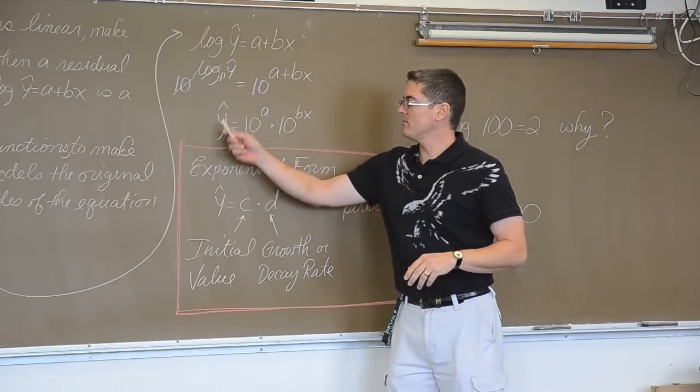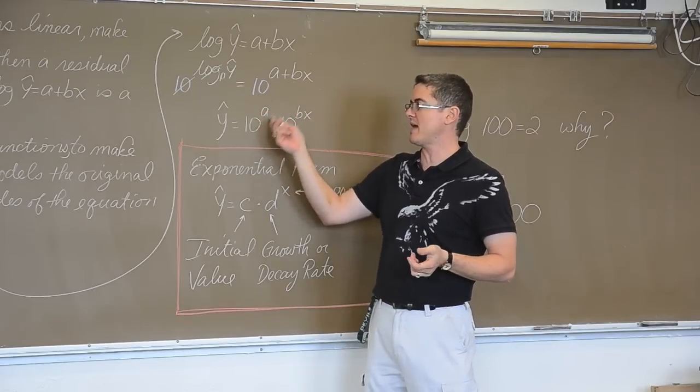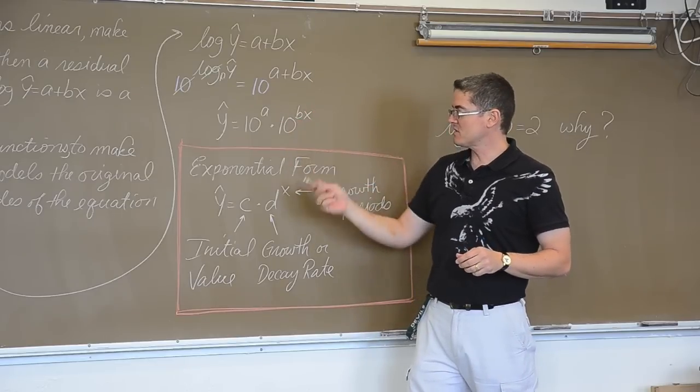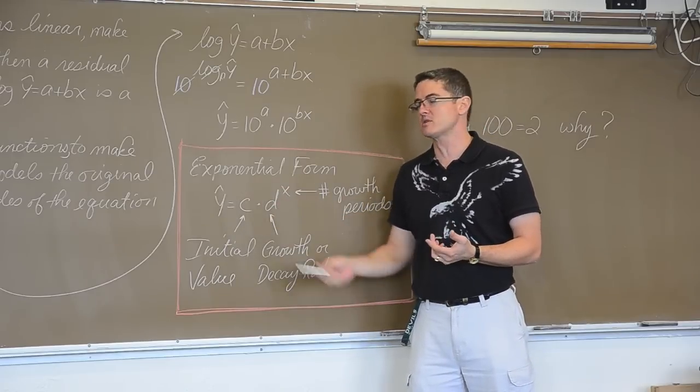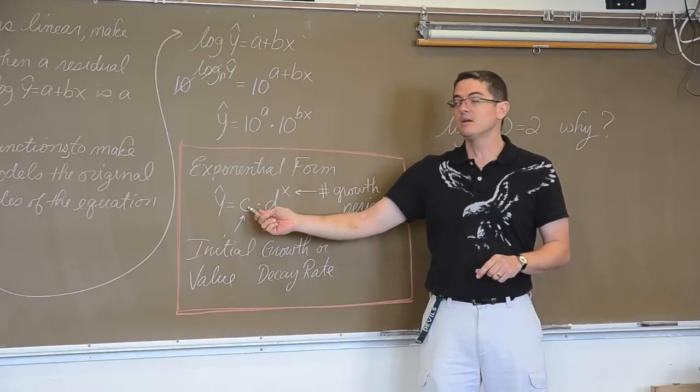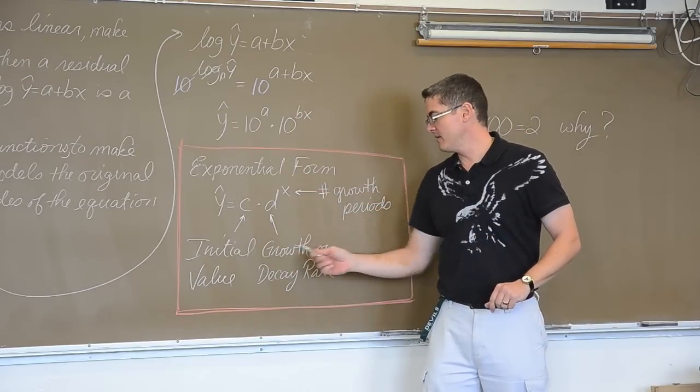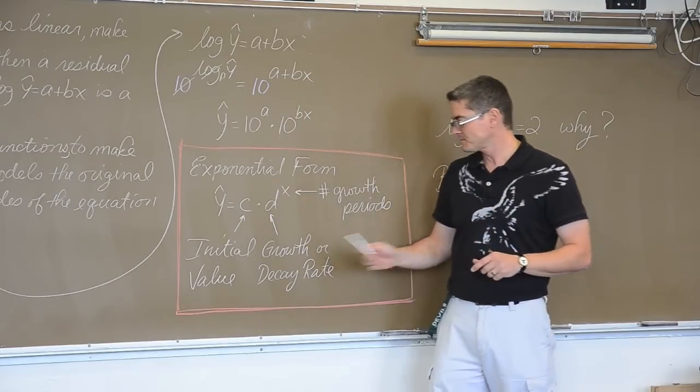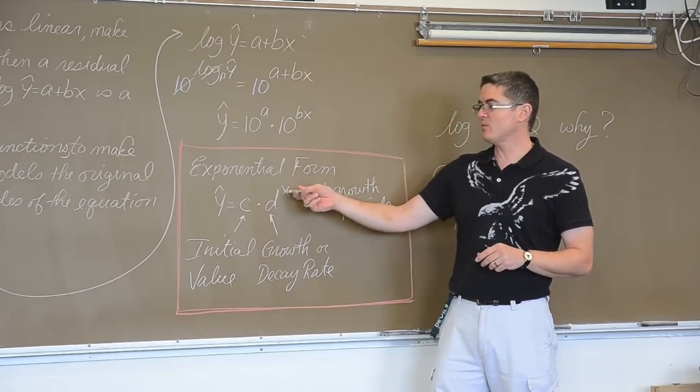Great! Well, now we got this and 10 to the a, you'll actually have a number out of your calculator so you can find out what this actually equals. So you have some number times 10 to something. This pattern, you might notice, will fit what you see in your textbook. And your textbook might use different letters. But exponential form is equal to y hat equals c, this is our initial value, times d to the x. And d is going to be our base, is going to be our growth pattern. How much are we growing every growth period? If d is larger than 1, it's growth. If d is less than 1, it's decay. And then we have an exponent. Well, the exponent x is the number of growth periods.